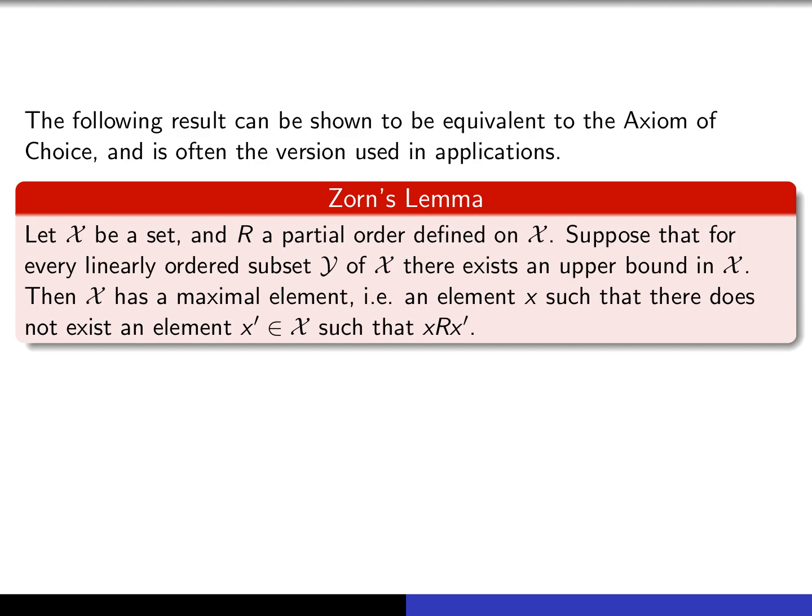So if we know that we can do that, then Zorn's Lemma asserts that X has a maximal element. And by maximal element, I mean an element x with the property that there's nothing in capital X that's bigger than or equal to that element x.